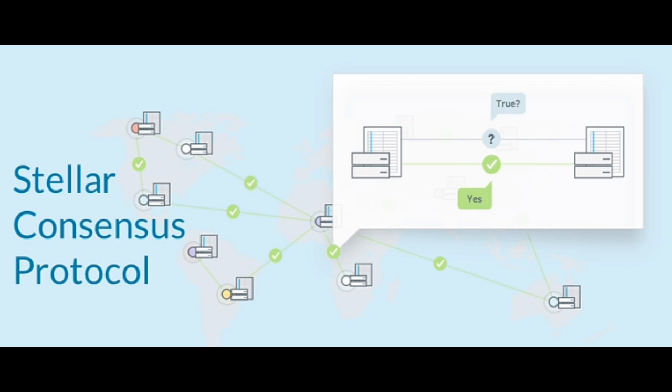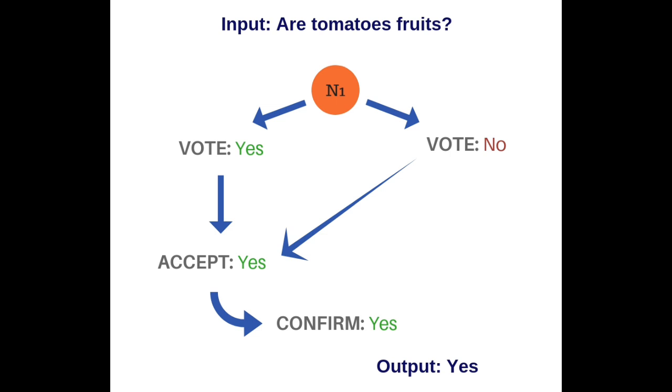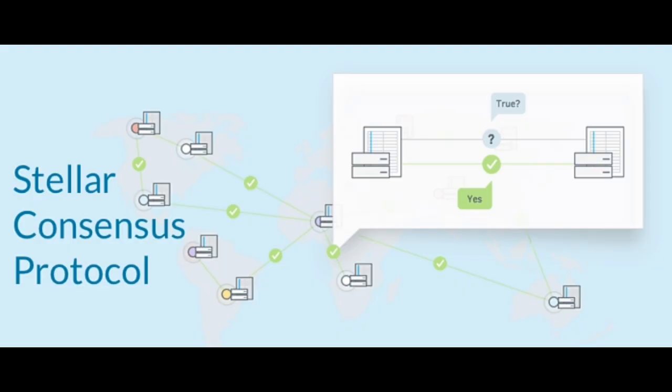A trust graph is exactly what it sounds like — a map of trust on the network. One person's security circle is small, but when you pull all those security circles together and they are linked, that is what builds out the global trust graph to determine who can be trusted on PI Network.